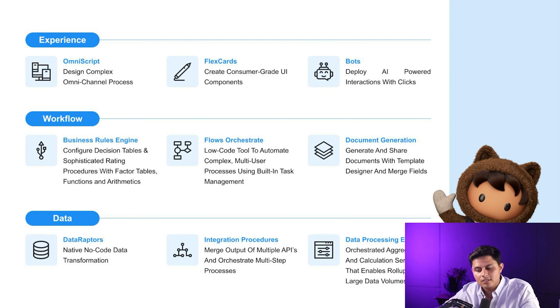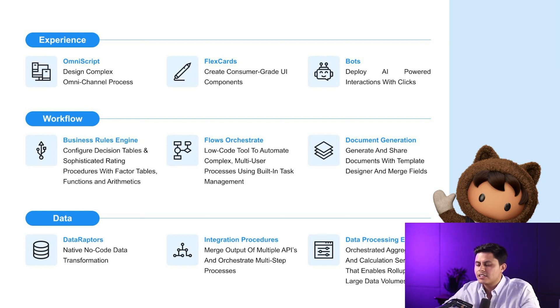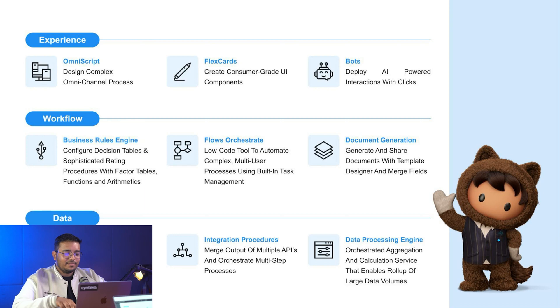Then comes data. There are Data Raptors, and then Integration Procedures, with the help of which you can integrate different platforms, applications, and systems required in the flow. Then comes the Data Processing Engine — this is an orchestrated aggregation and calculation service that enables roll-up of large data volumes. If you want to process a large number of records, for example someone enters their account number and you have millions of bank accounts, you can use the Data Processing Engine to retrieve the account information and identify the owner of that particular account.